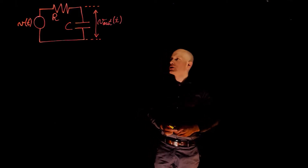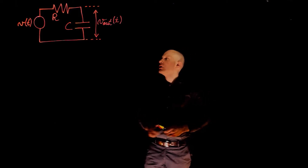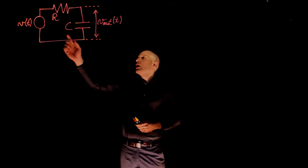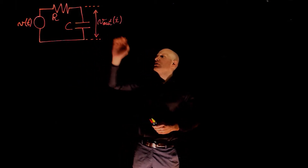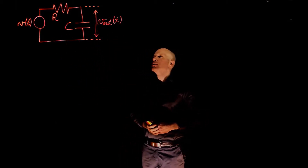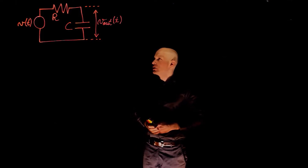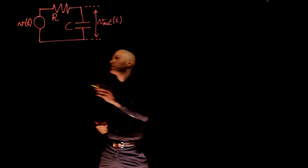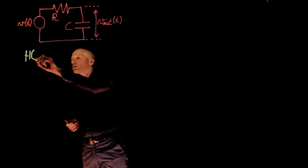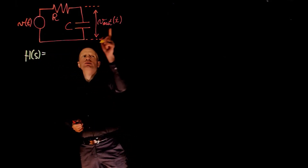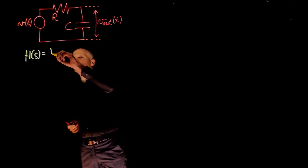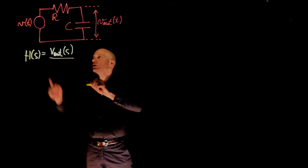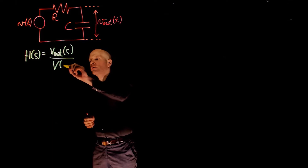In this example we have an RC circuit supplied with a voltage V of t, and the output voltage of this system is measured across the capacitor C. We are interested in the transfer function between the output and the input voltage, that is, H of s equals the output V out of s over the input V of s.